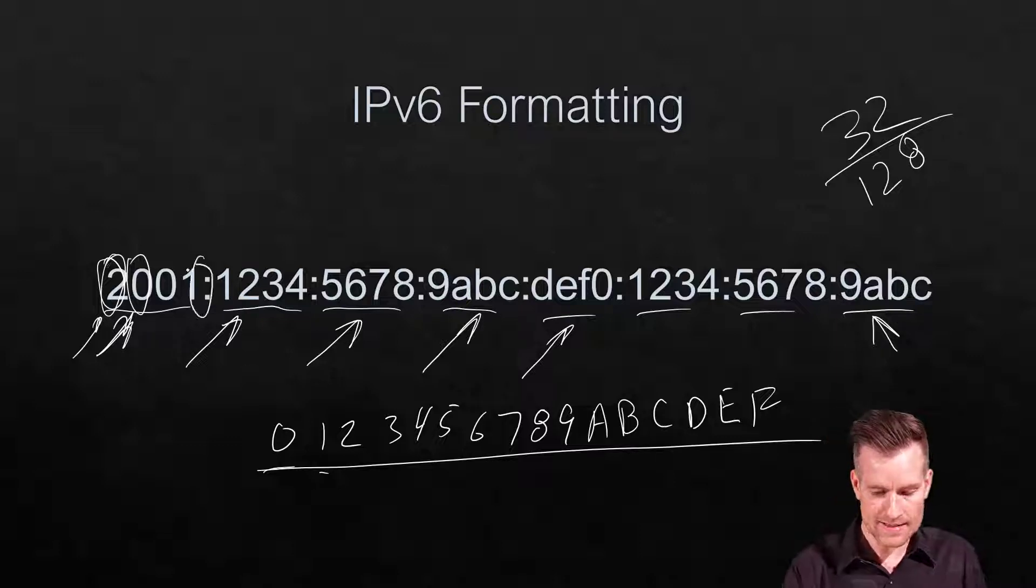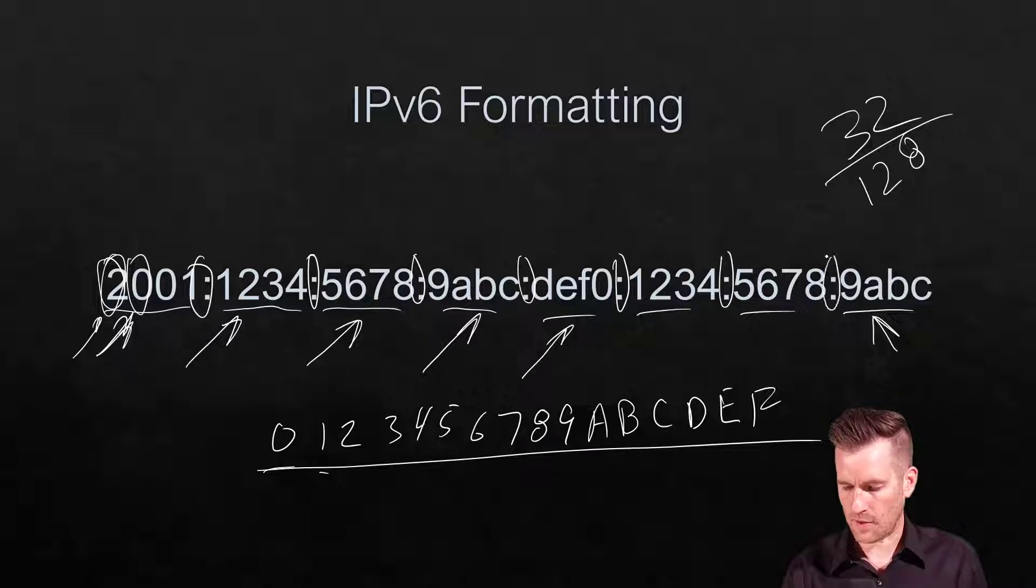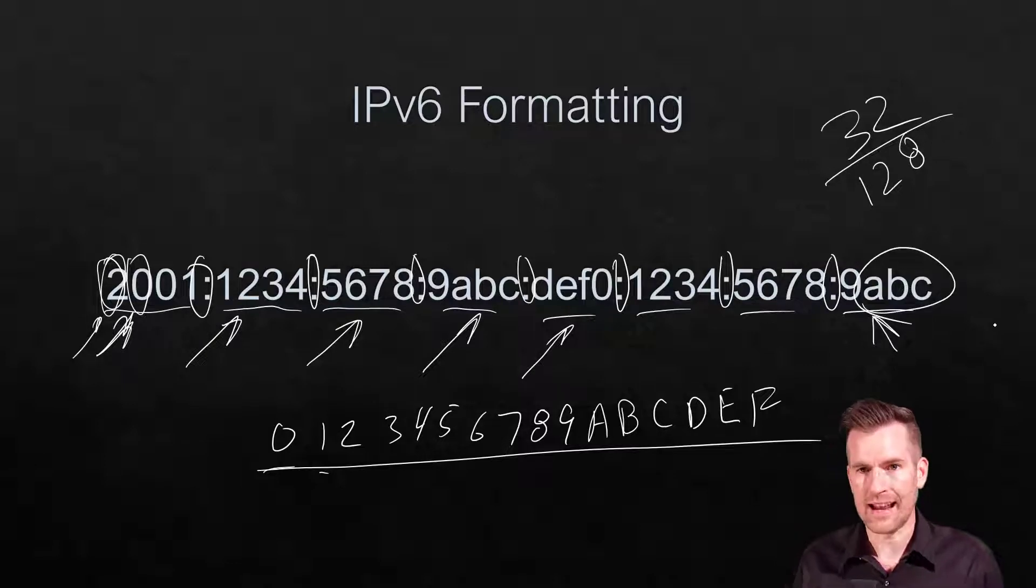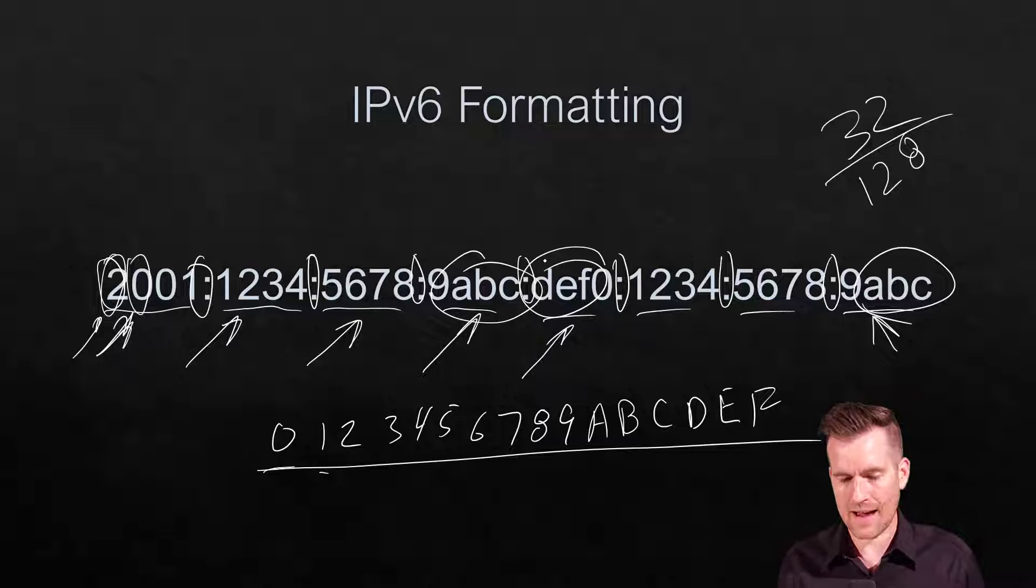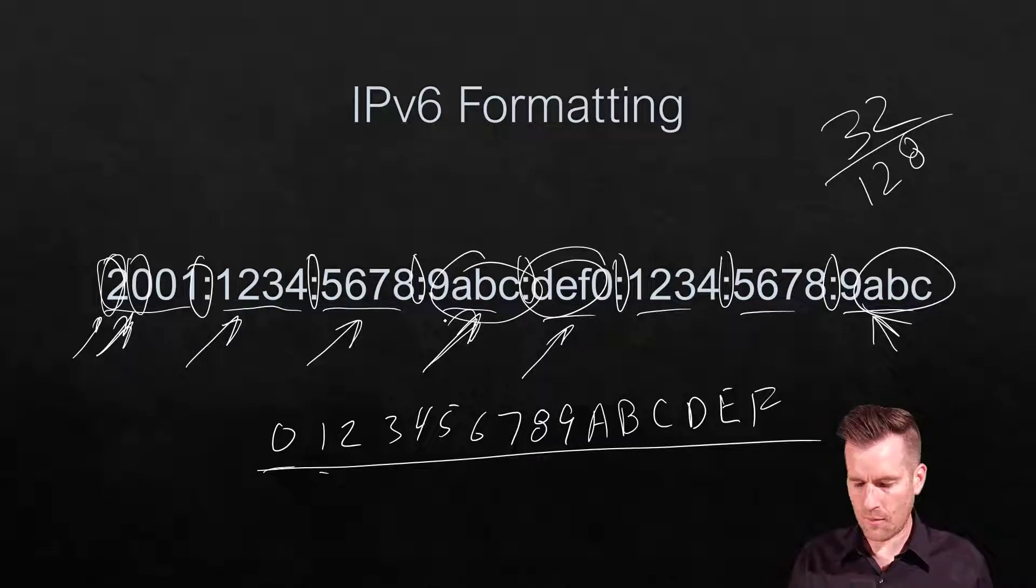Hextets are divided by colons, which is different from IPv4 addresses. The hexadecimal letters A through F are shown here in lowercase. Technically they should be lowercase, but you'll see equipment that uses uppercase. Both are generally accepted, though officially they should be lowercase. That's the IPv6 formatting and what IPv6 addresses look like. Let's break it down further.